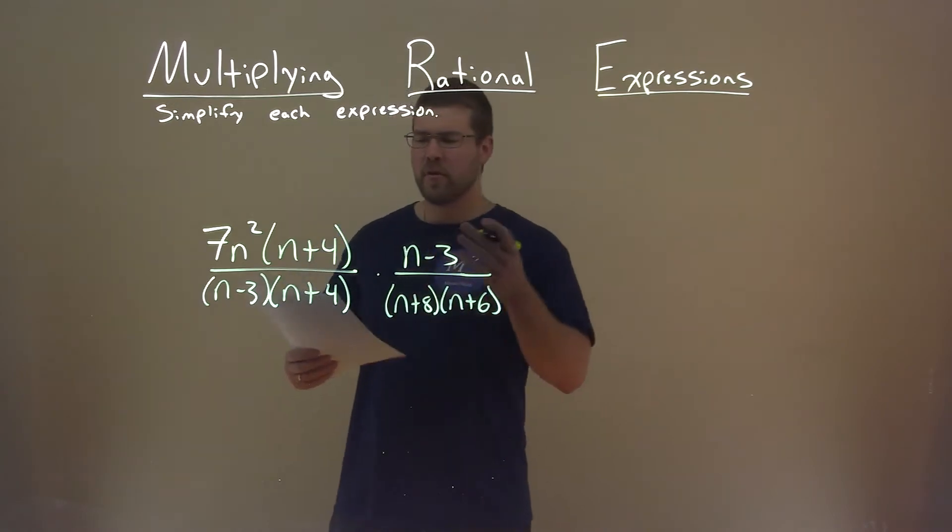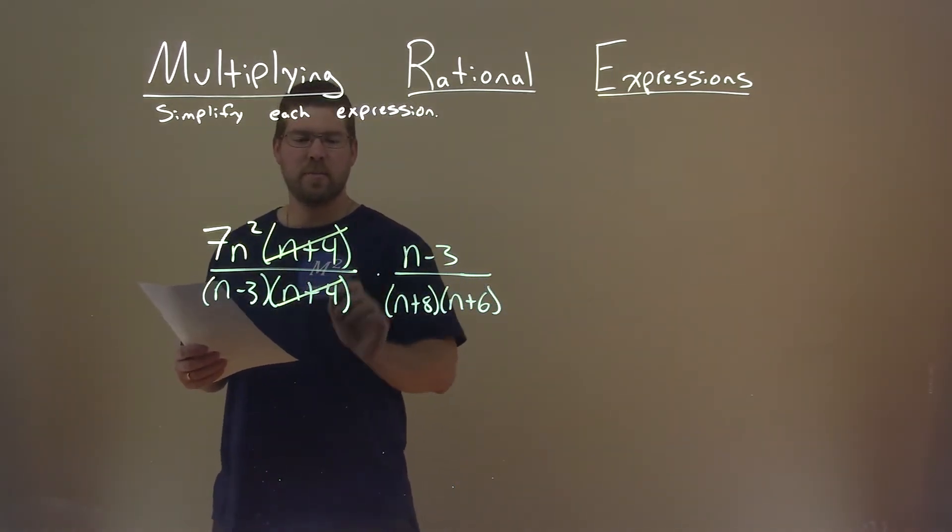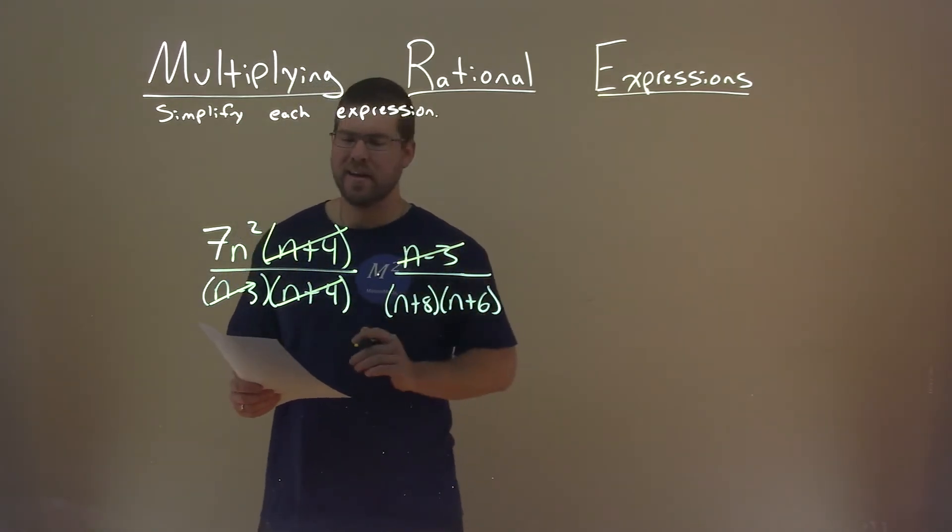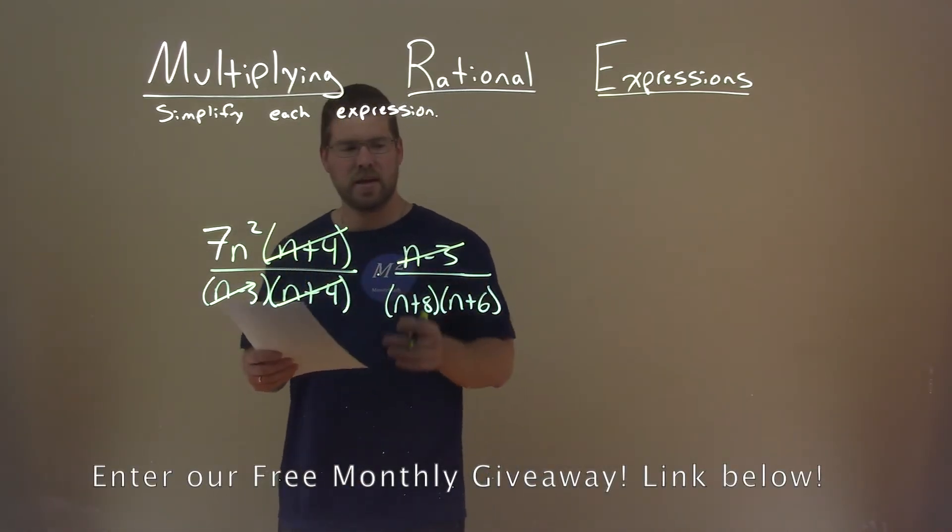Well, I'm looking for things that I can cross off. I mean, n plus 4 here, and n plus 4 here. Done. Well, this n minus 3, and this n minus 3 can cancel as well. And there's nothing else I see that can cancel.